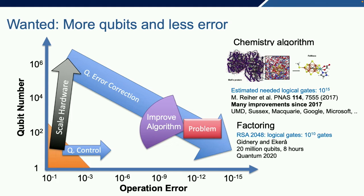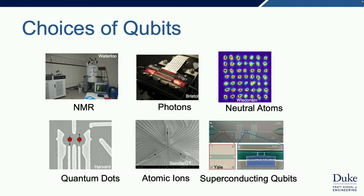There are actually tons of choices for quantum bits. A lot of early work was done with NMR because NMR machines had all the control systems, but they don't make the best quantum computers. You can make qubits out of anything that holds quantum states: photons, neutral atoms, quantum dots, dopants in materials, atomic ions, superconducting qubits. At present, atomic ions and superconducting qubits are ahead because they've performed the most complex quantum processes so far—but there's still space for others to go.